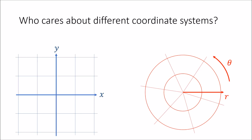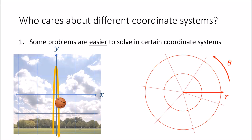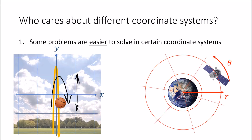There are two reasons for inventing multiple coordinate systems. The first is that some problems are easier to solve in certain coordinate systems. For example, a ball being thrown up and falling down is easier to solve in Cartesian coordinates since some of the coordinate lines are aligned with the up-and-down motion of the ball. On the other hand, an object orbiting the earth in a circular path will be easier to solve in polar coordinates since some of the coordinate curves are also circular.